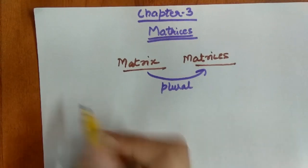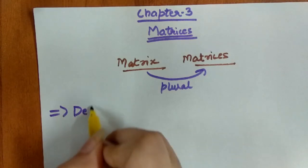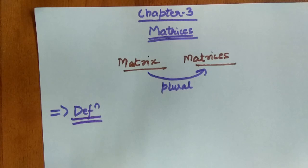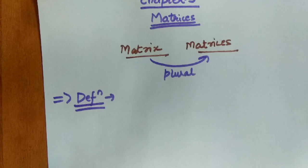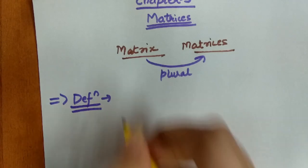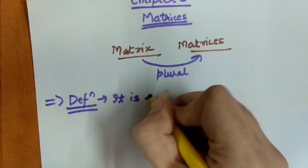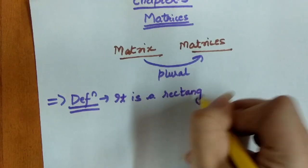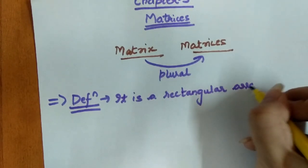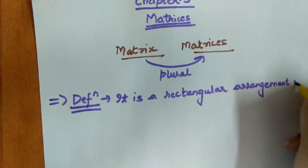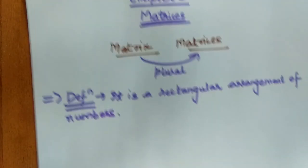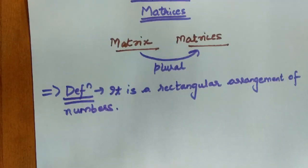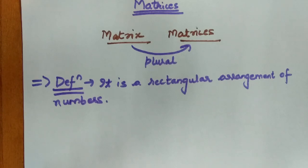So let's start with this. I will tell you the definition of matrices. Don't be confused — I am writing the definition of matrix, then I will explain all the points. Basically, the definition of a matrix is a rectangular arrangement of numbers.